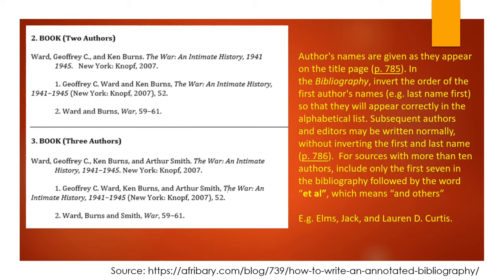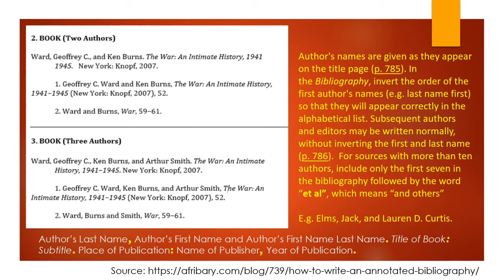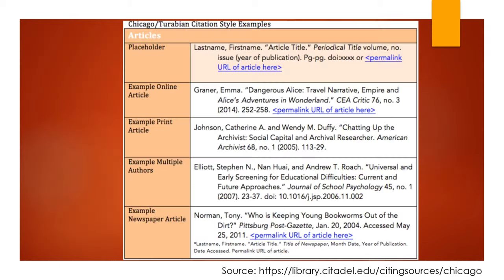Subsequent authors and editors may be written normally without inverting the first and last name. For sources with more than 10 authors, include only the first seven in the bibliography, followed by the word 'et al.' which means 'and others.' Here is how you should write it: author's last name, comma, author's first name, and author's first name last name. Period. Title of book, colon, subtitle. Period. Place of publication, colon, name of publisher, comma, year of publication, period.